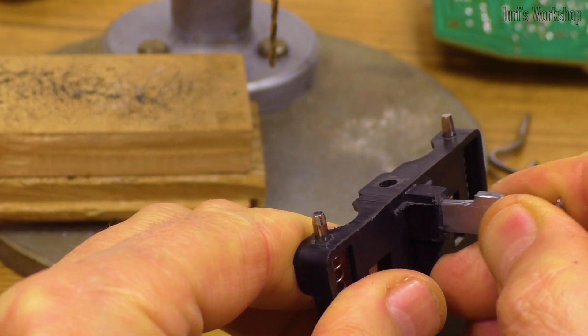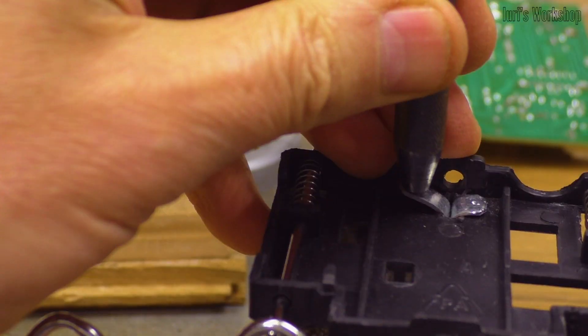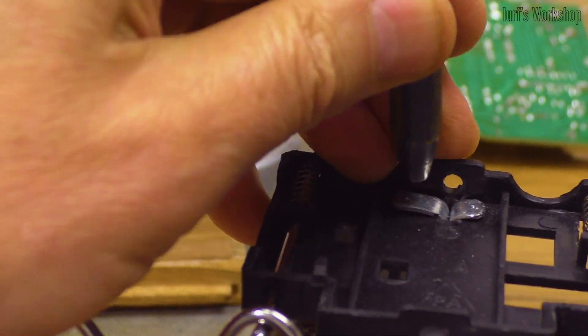The fact is that in the past, some toasters also used less efficient heating elements based on round nichrome wire.